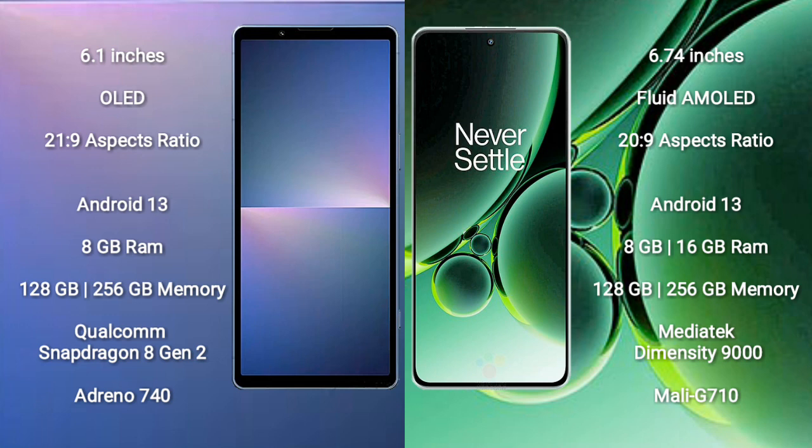OnePlus Nord 3 comes with 8GB to 16GB RAM and 128GB to 256GB internal storage, a MediaTek Dimensity 9000 processor, and GPU Mali-G710.